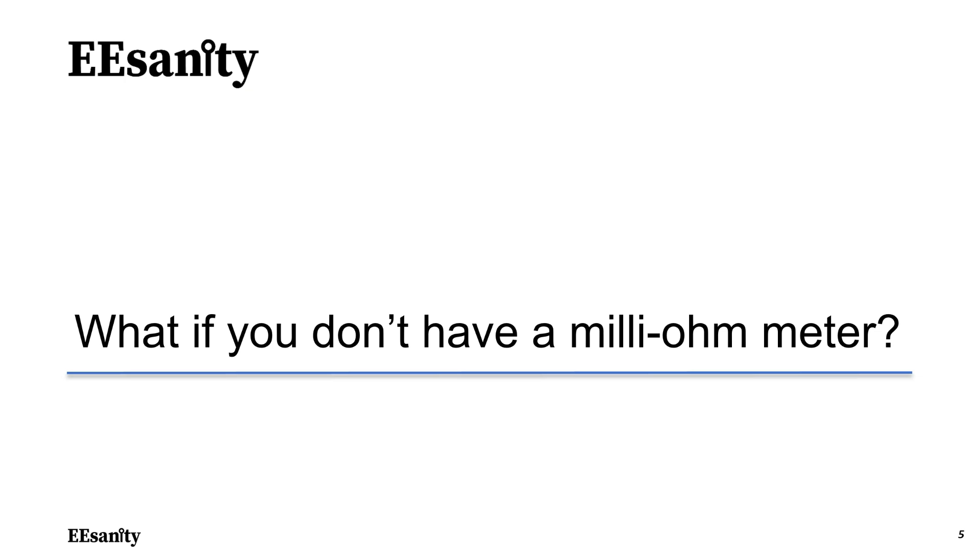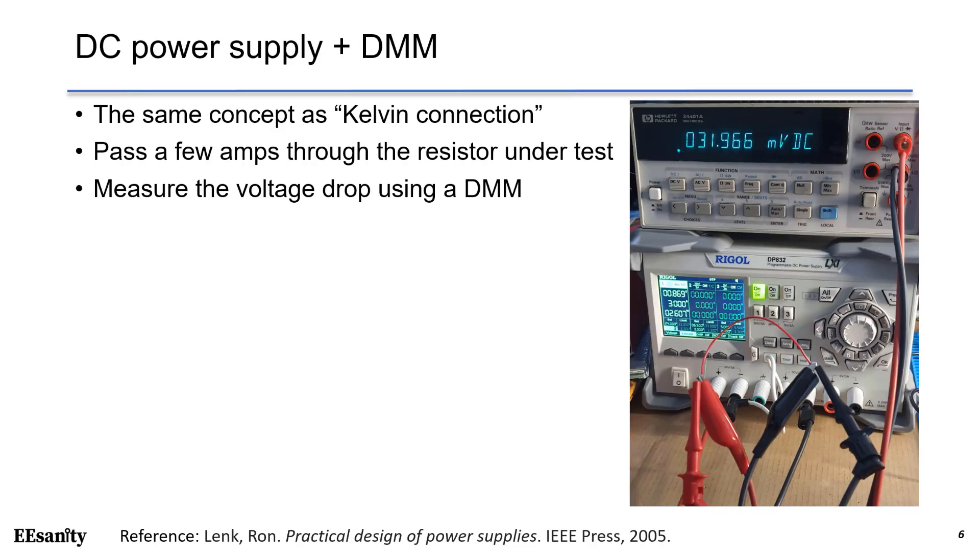What if you don't have a milli-ohm meter? This is another solution using a bench power supply and a digital multimeter. This is the same concept as Kelvin connection in milli-ohm meters. We need to pass a few amps through the resistor under test, and we measure the voltage drop across the resistor using a multimeter.